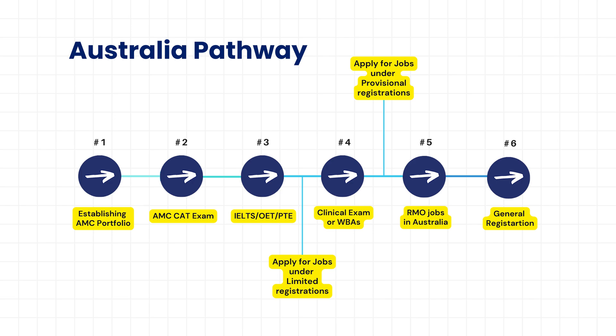So this is about the AMC standard pathway program. AMC is a two-part exam: part one and part two. You can apply for jobs with just AMC part one as well. If you want to increase your chances to get a job, it's better you do your AMC part one and part two and then apply for jobs. So this is the summary about the pathway.